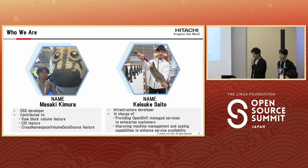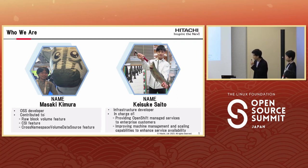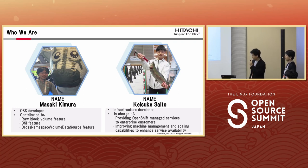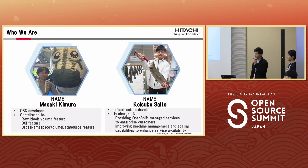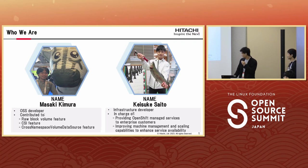My name is Keisuke Saito. I have contributed to developing infrastructure and my hobby is fishing, as shown in the picture on the right. Recently I have been engaged in providing OpenShift managed services to enterprise customers and improving the functionality of machine scaling.